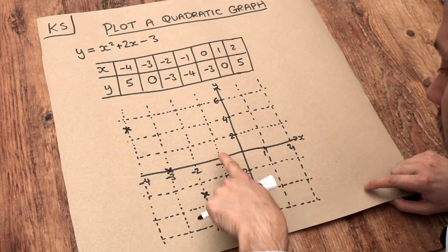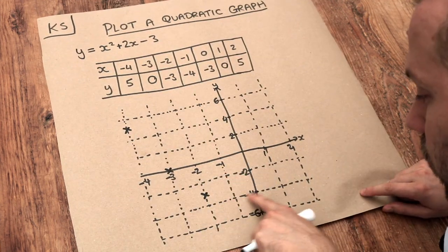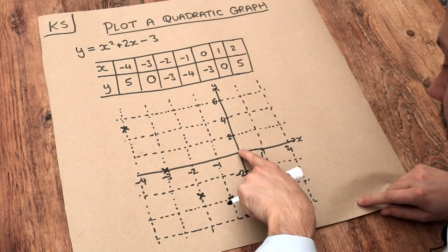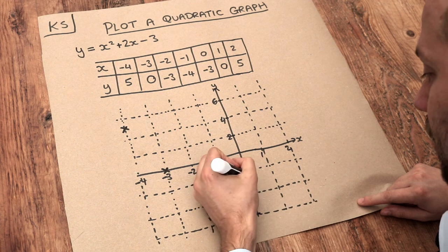Then we've got minus 1, minus 4. So minus 1, minus 4 here. When x is 0, y is minus 3. So 0, minus 3 is going to be here.